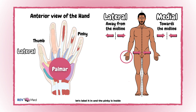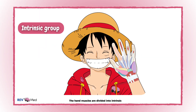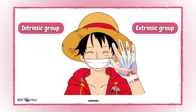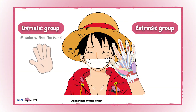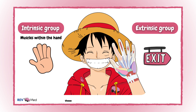The pinky is inside on the medial side. The hand muscles are divided into intrinsic and extrinsic groups. All intrinsic means is that these muscles are entirely within the hand, and for extrinsic, these muscles are originating in the forearm.